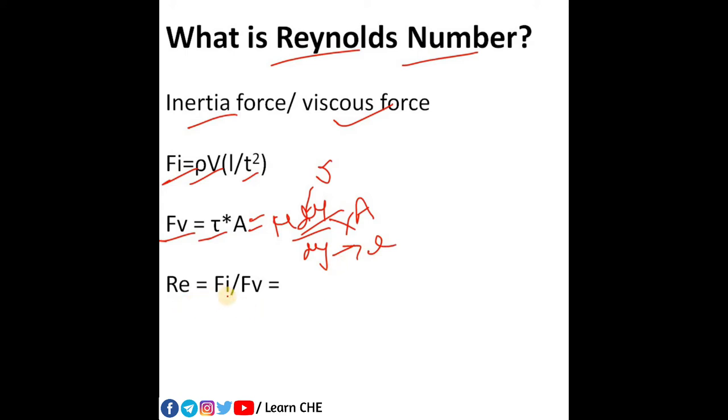So when I write this in this ratio, it will become as here you can see simply rho. This is the volume, volume I can write as L cube, then L by T square.